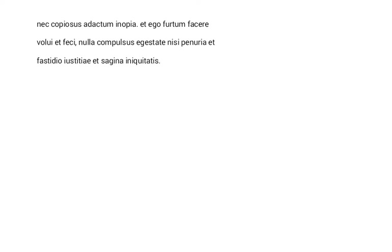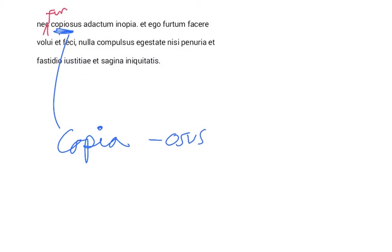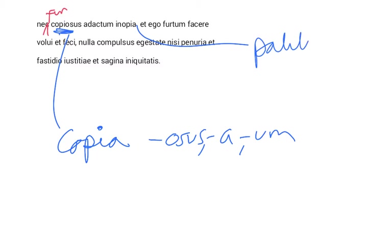He says neither does a fur copiosus — that is, a rich thief, one that is filled with abundance. This is from the noun copia, which means an abundance or supply. When you add the suffix -osus in Latin, it means 'filled with.' Nor does a thief that is filled tolerate — we have to add in the verb from the previous sentence — patatur.